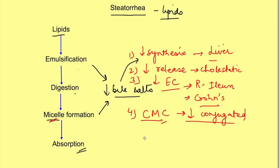But if there is certain disease which deconjugates the bile salts, like bacterial overgrowth syndrome, bacteria actually deconjugate the bile salts. This critical micellar concentration rises because unconjugated bile salts have a higher critical micellar concentration.